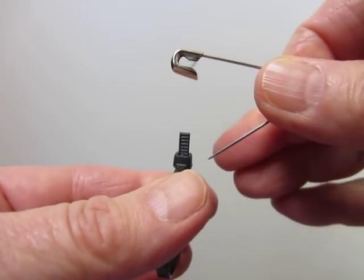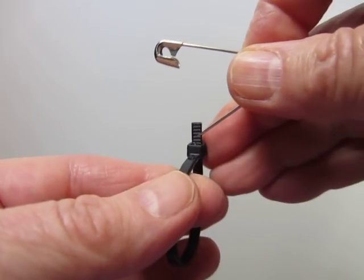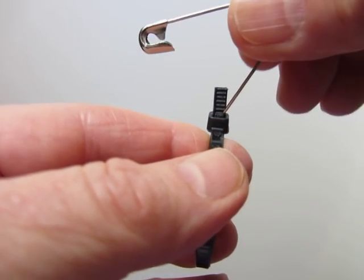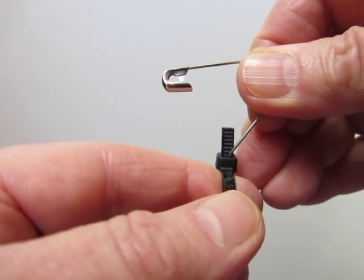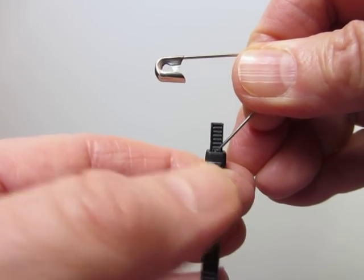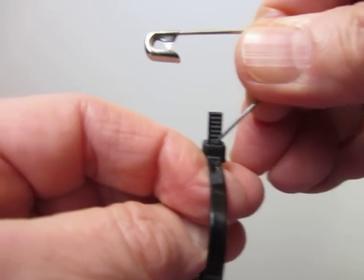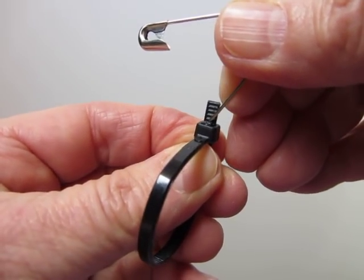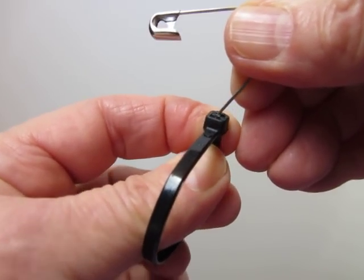So you turn it this way, put the safety pin there to pry that tongue away from the ribbing, and then if you're lucky and this is an easy one to do, you can just pull the thing out.